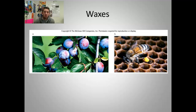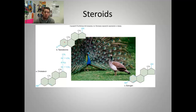Going through each one: what's the purpose of waxes? You can see a shiny cuticle on each one of these leaves — the waxy cuticle keeps them from desiccation, keeps them from drying out and losing water. Waxes are also used in the construction of hives by honeybees. Steroids — remember this — they typically have a four-ring carbon structure: four carbon rings in succession. Steroids are chemical messengers. You can see the example of sexual dimorphism — what testosterone does to the body versus estrogen, like this male peacock displaying for the female.